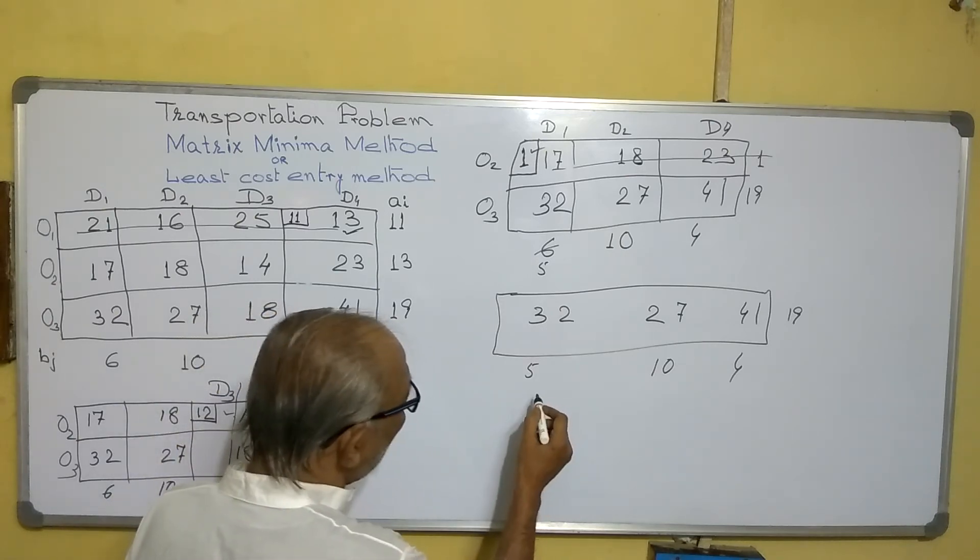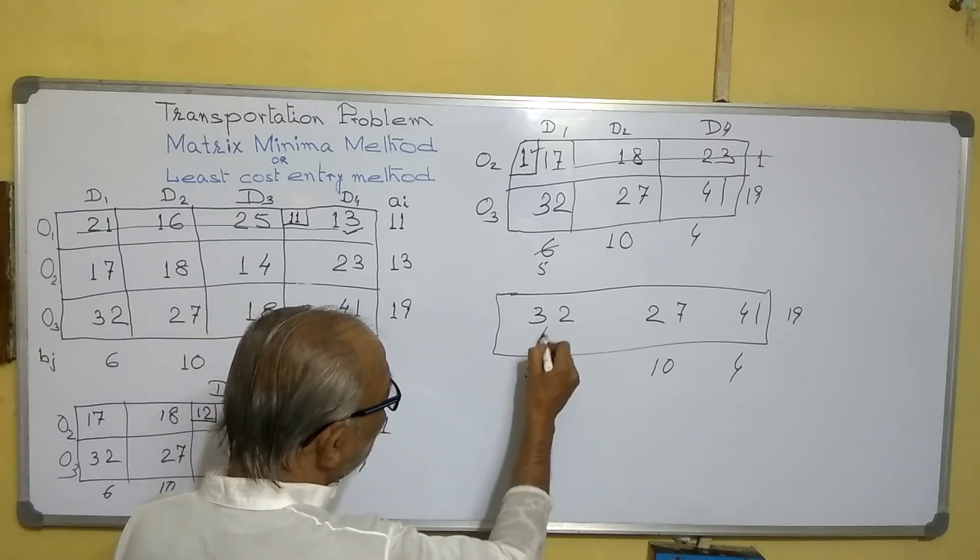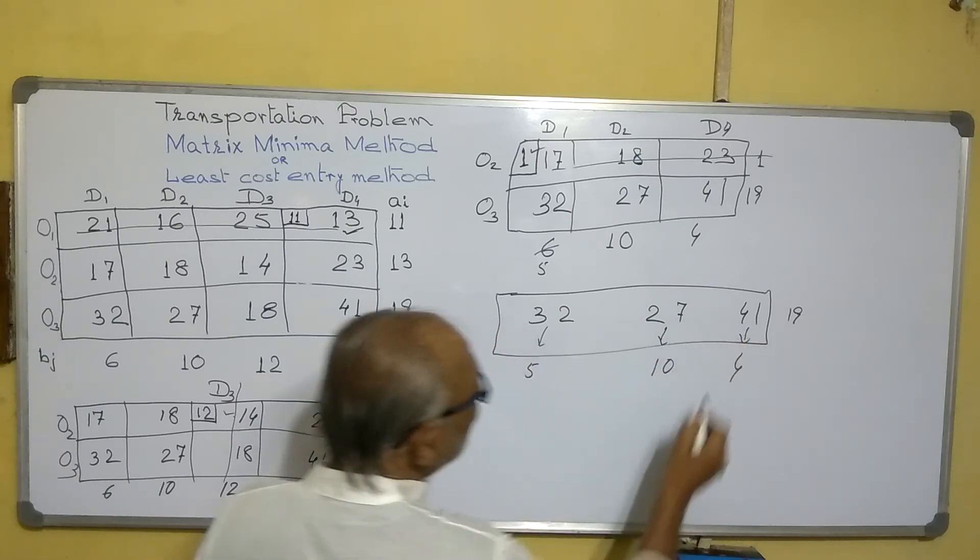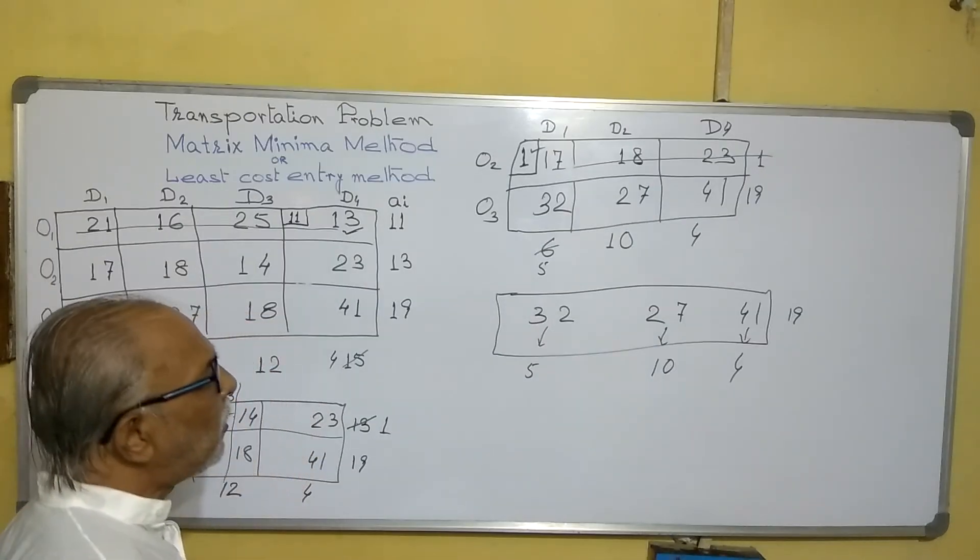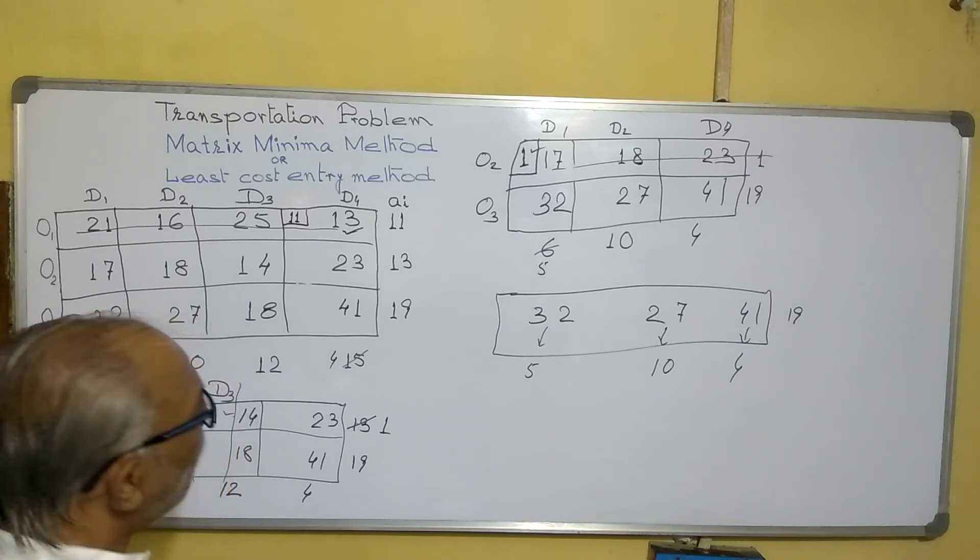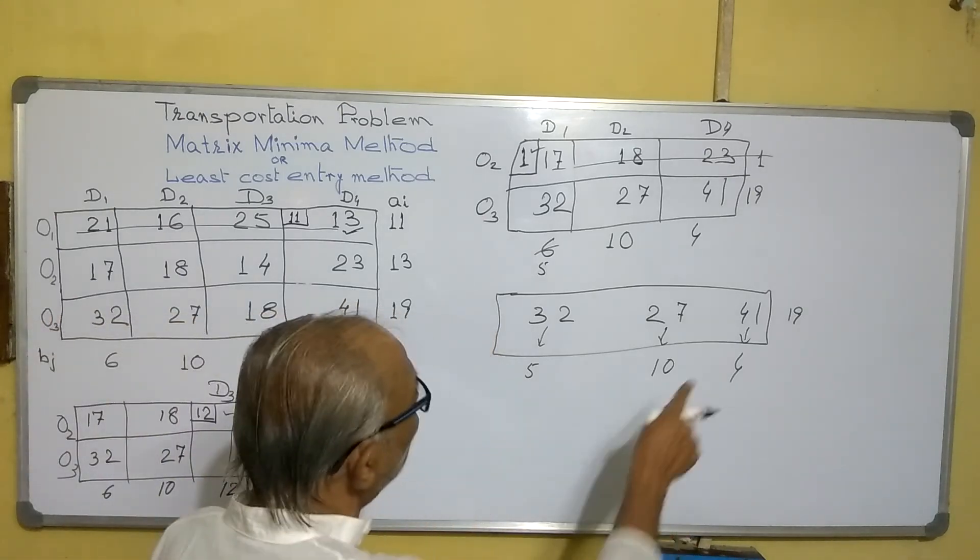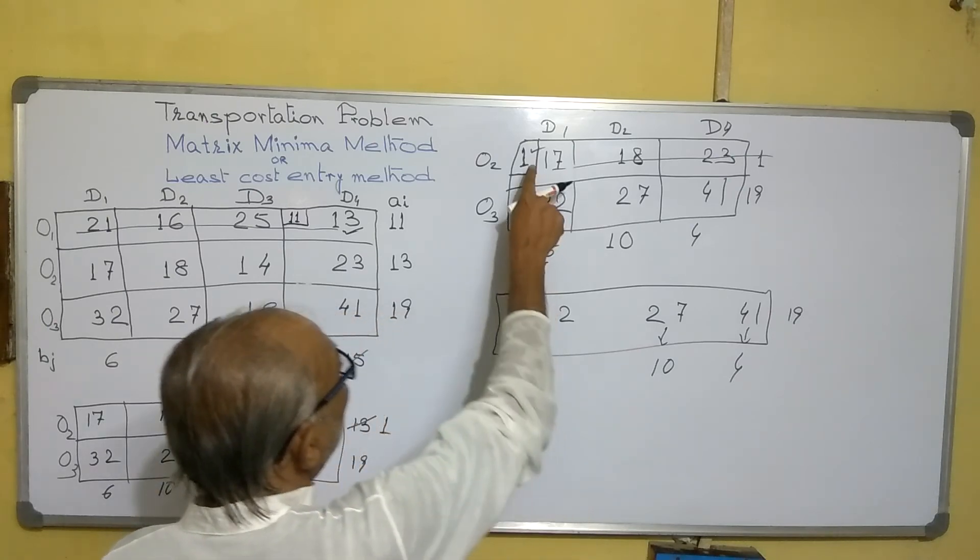So now we have no options. We have to supply this one 5, this one 10, and this one 4. In this way we can complete our supply. So how many supplies we have made? This is 3 and 1 is 4, here is 1, 5, and here is 1, 6.